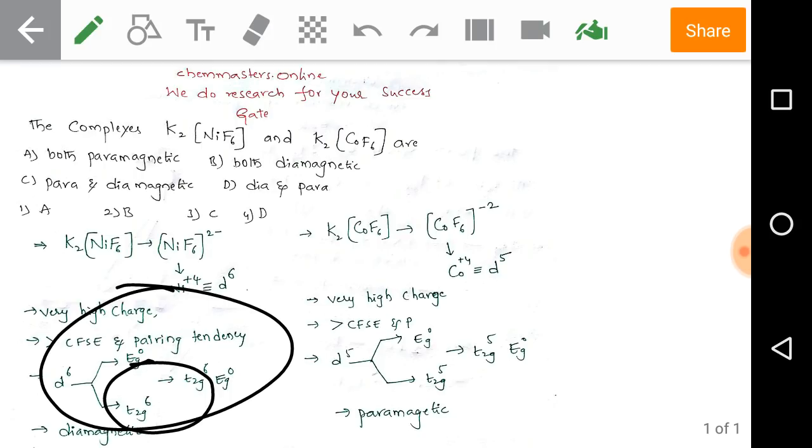By looking at this information, we can conclude that the 6 electrons are paired up in t₂g.